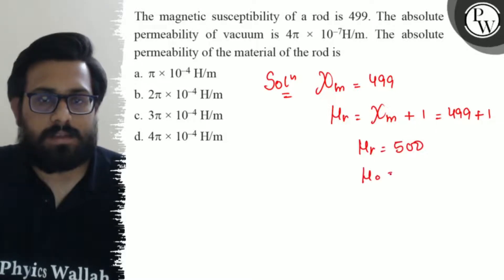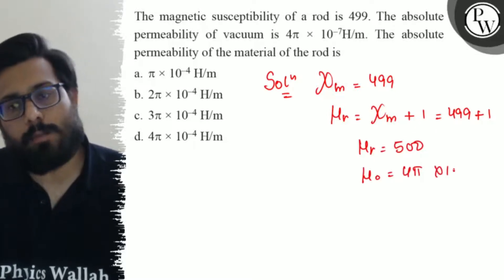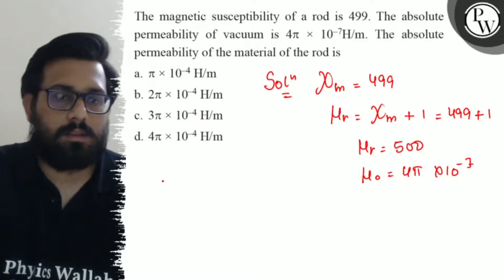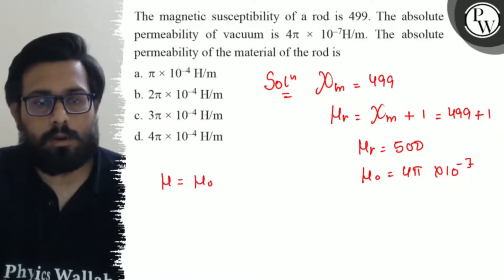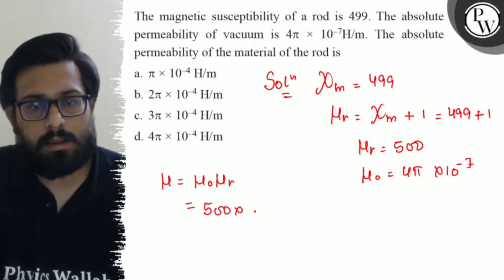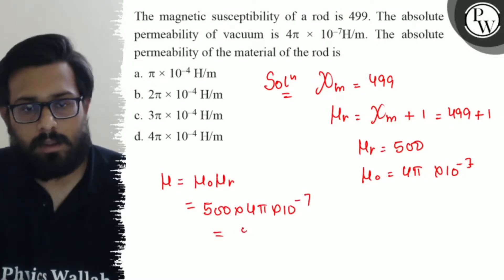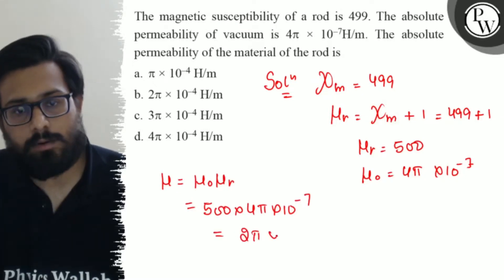μ₀ is given as 4π × 10^-7. And from here, you can find out the value of μ as nothing but μ₀ into μr. μr is 500, μ₀ is 4π × 10^-7. This comes out to be 2π × 10^-4.